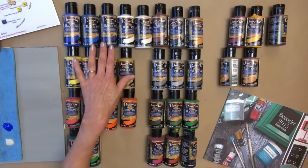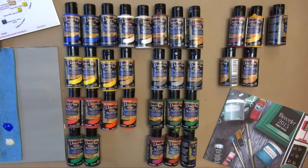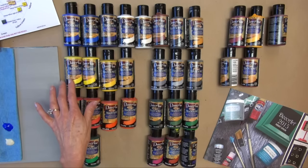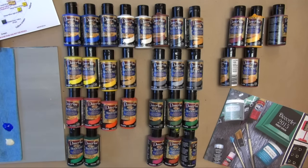We've got three blues: ultramarine blue, thalo blue, cobalt blue hue. Some yellows: hansi yellow light, hansi yellow medium, hansi yellow, and yellow oxide.